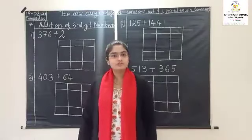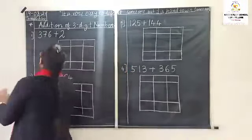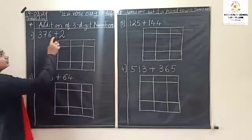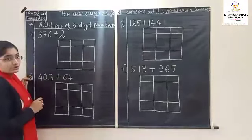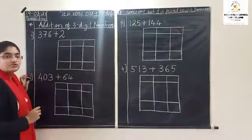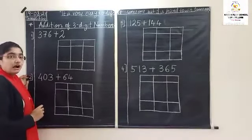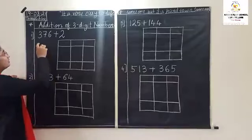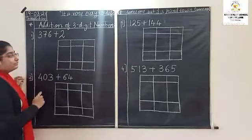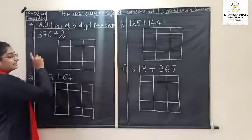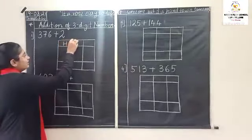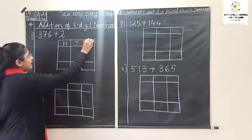See the first question: three hundred and seventy-six plus two. The question is not given in the table — only the table is drawn. How to arrange the number? See, how many digits is this number? One, two, three. Three hundred and seventy-six is a three-digit number. First, write here: hundreds, tens and units.